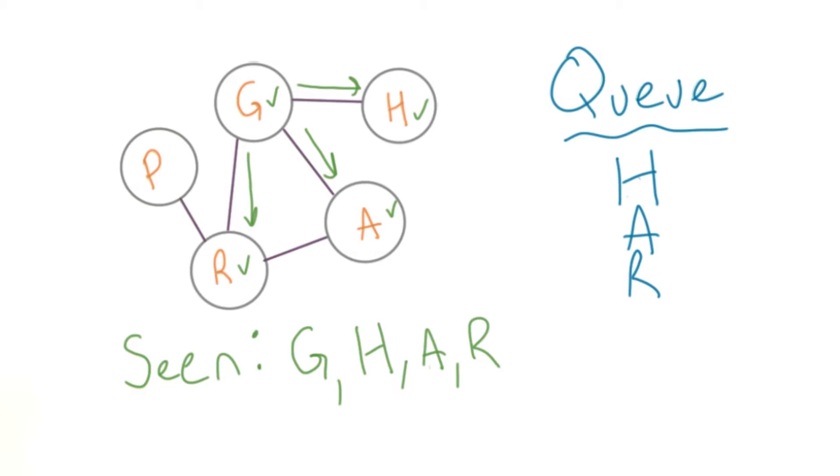When we've run out of edges, we can just dequeue a node from the queue and use that as our next starting place.